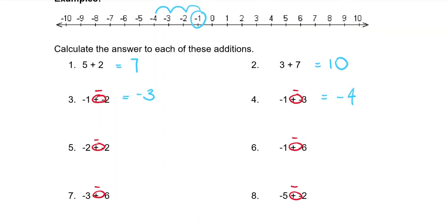For question 5 we start at negative 2. Minus 2 means jump 2 to the left and we land at negative 4. Question 6: starting at negative 1, we subtract 6, so 1, 2, 3, 4, 5, 6 makes the answer negative 7.